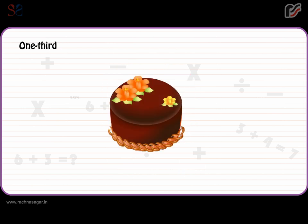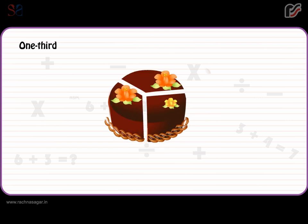One Third. When a whole thing is divided into three equal parts, each part is called one third. One third is written as 1/3. And 1/3 + 1/3 + 1/3 = 1 whole.